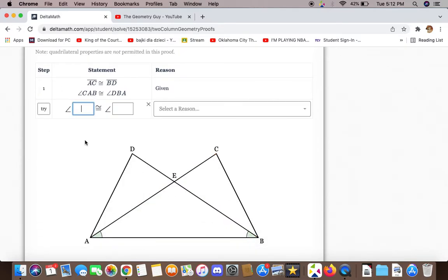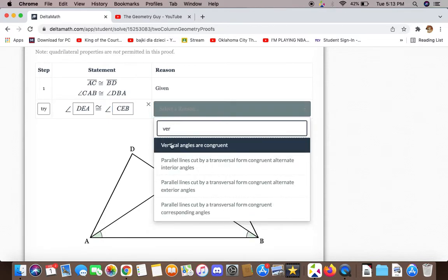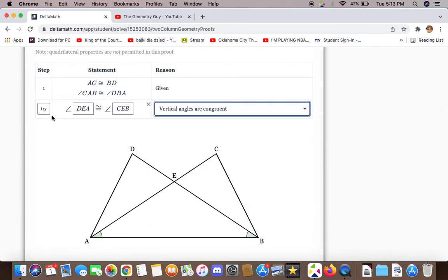So the first thing we can say is DEA and CEB are congruent to each other because the vertical angles are congruent.